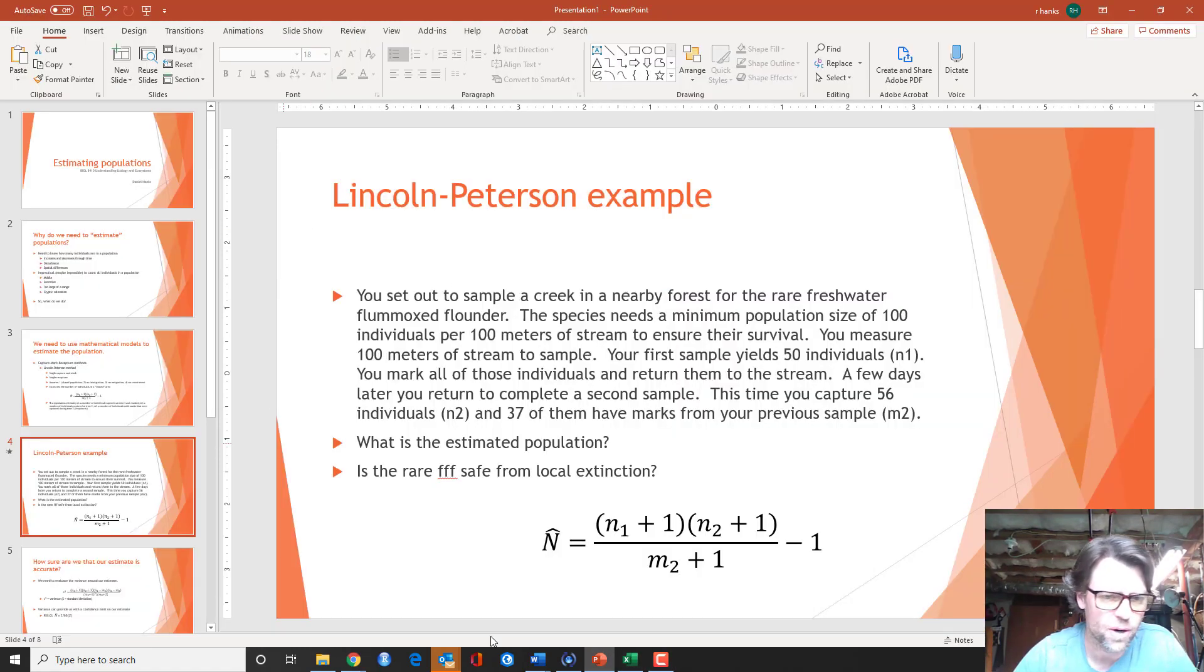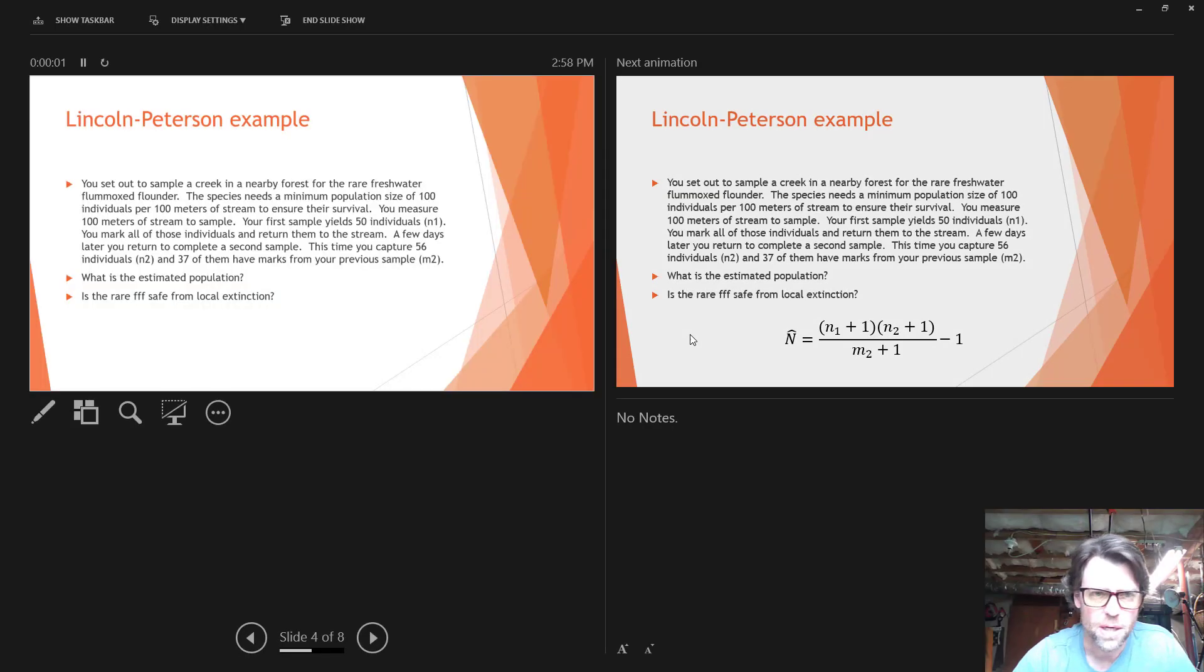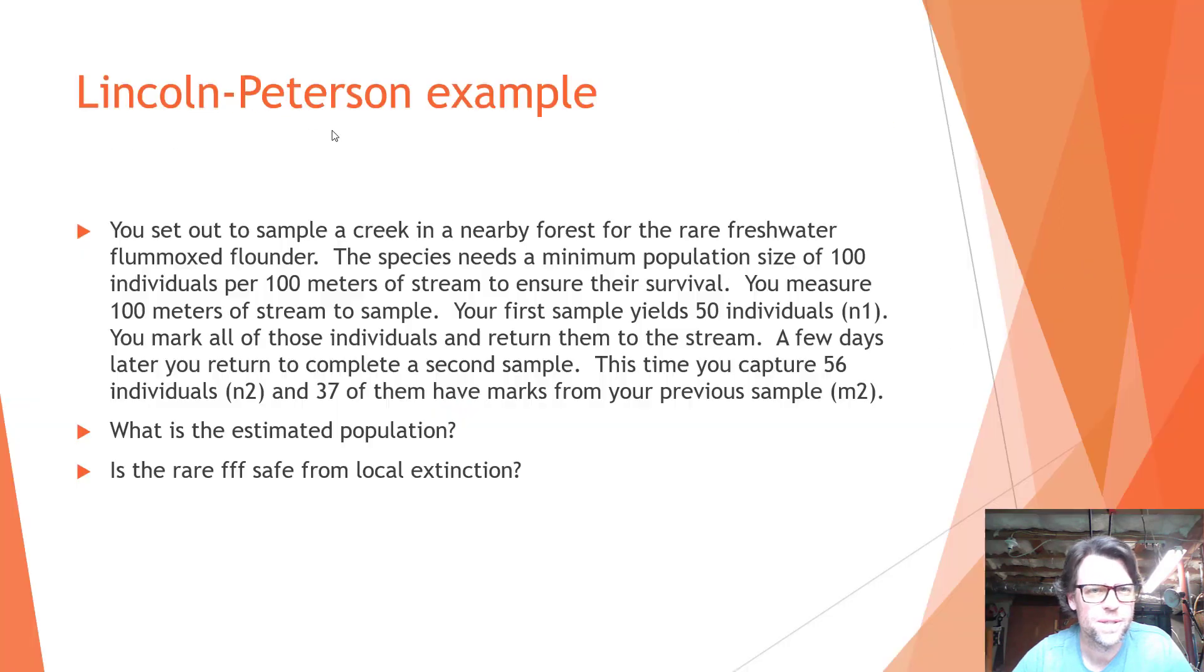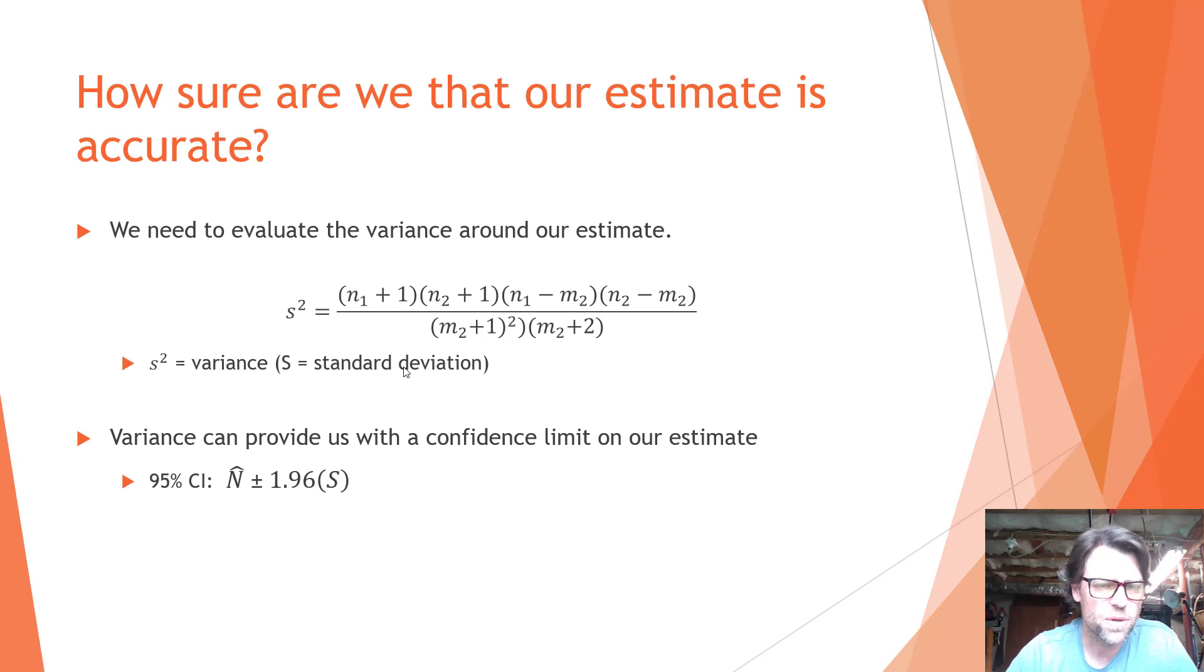All right, so let's take a look at our continuing back with our example that we're looking at. So we know our population is what did we say our population was? Let's take a look. 75.5 individuals. So it's actually not large enough to stave off local extinction, at least in this section of the stream. So we want to know how accurate our estimate actually is. So are we really good at this estimate, or is there quite a bit of variance around our estimate? And how much variance and should we consider how much confidence we have in our estimate and making recommendations based on that estimate?